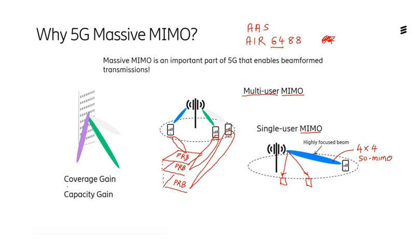Through multi-user MIMO, we can increase the capacity. The energy efficiency of the power amplifiers used in these new products is much more efficient than in previous products. In addition, we also see a reduction in interference to other UEs due to the directivity of the beams that are generated for a particular UE.